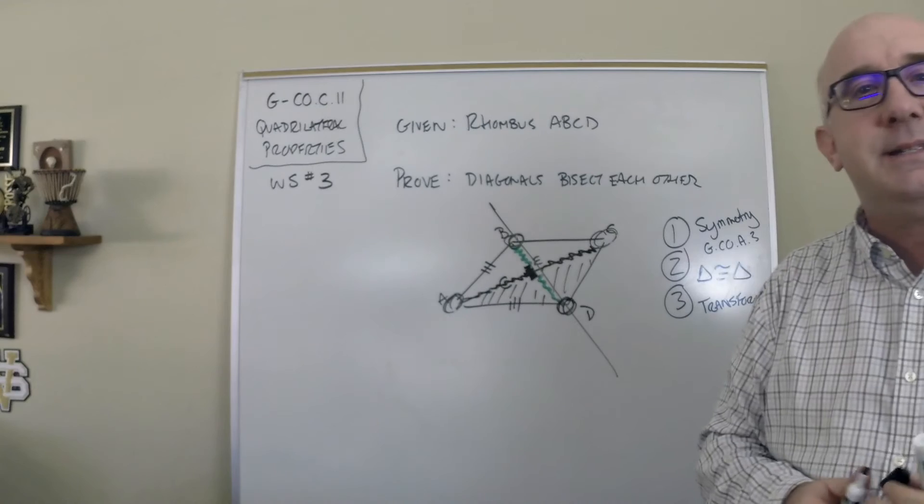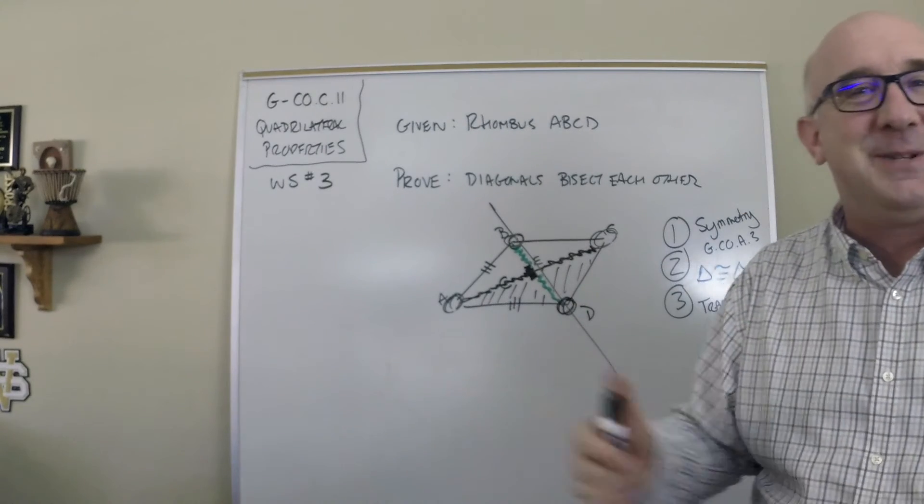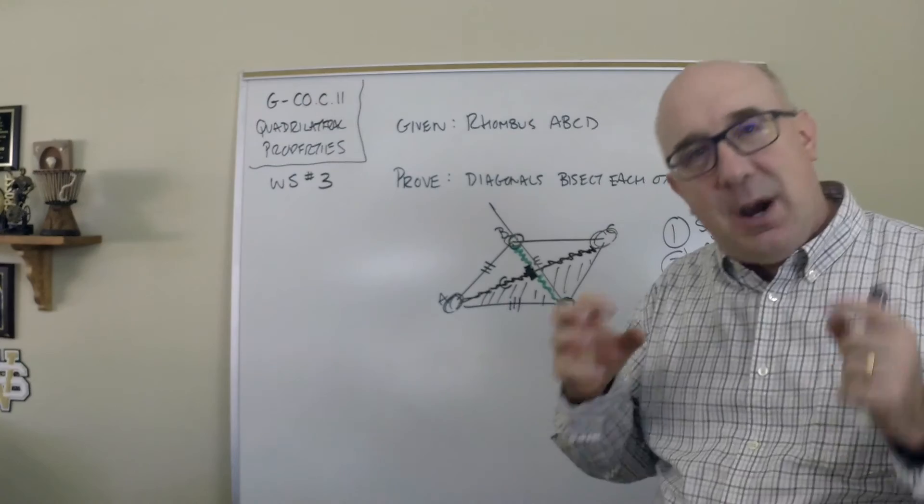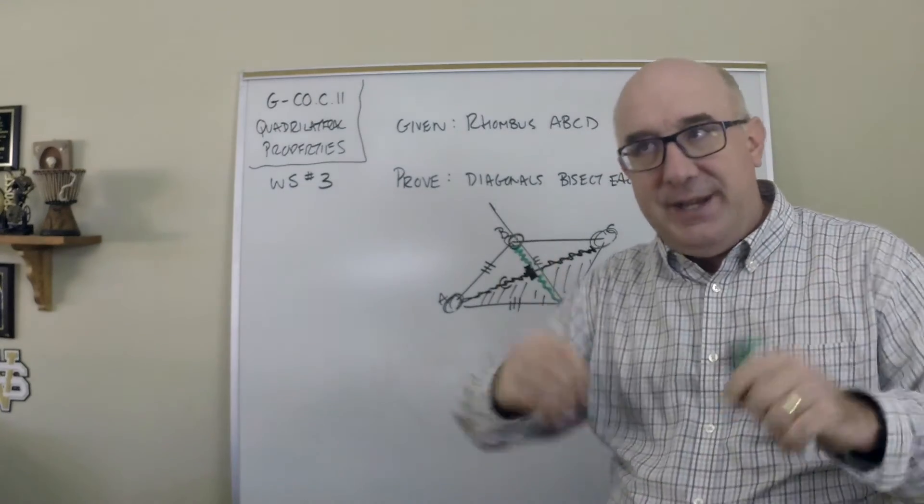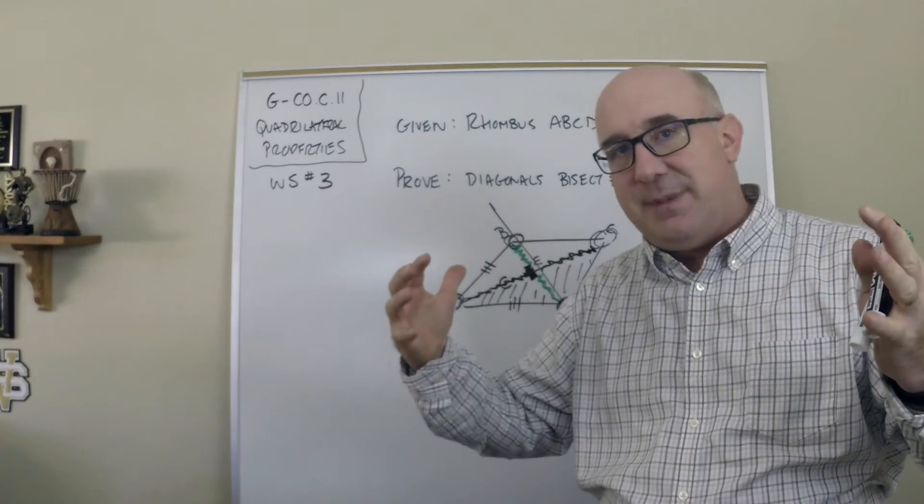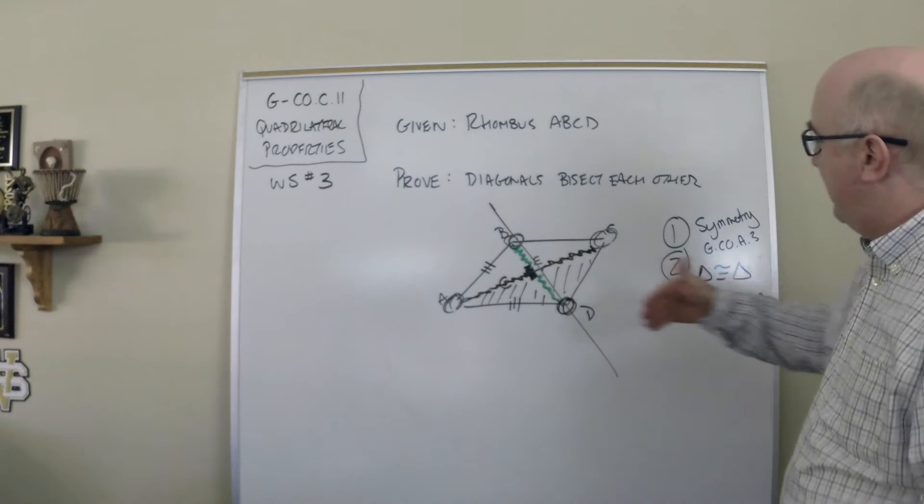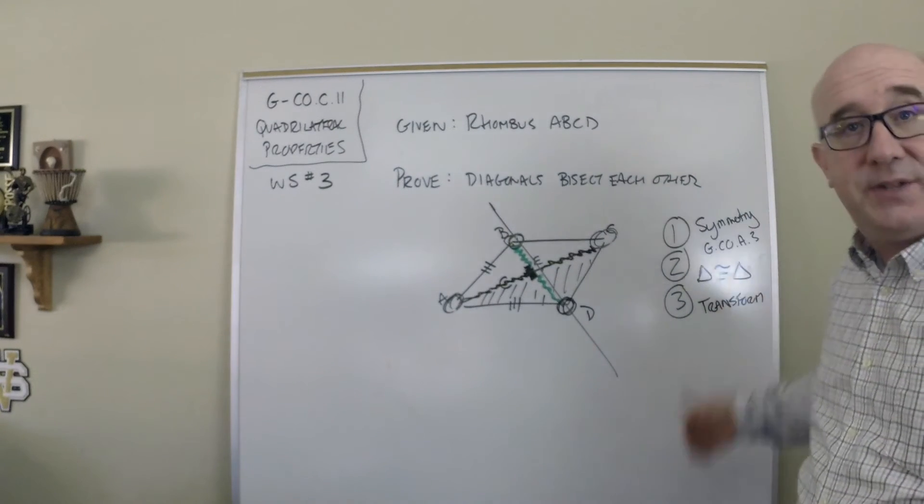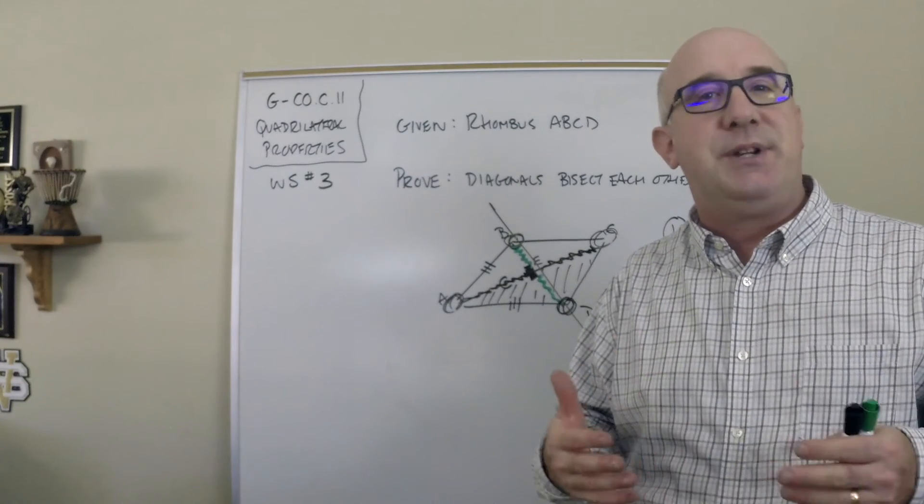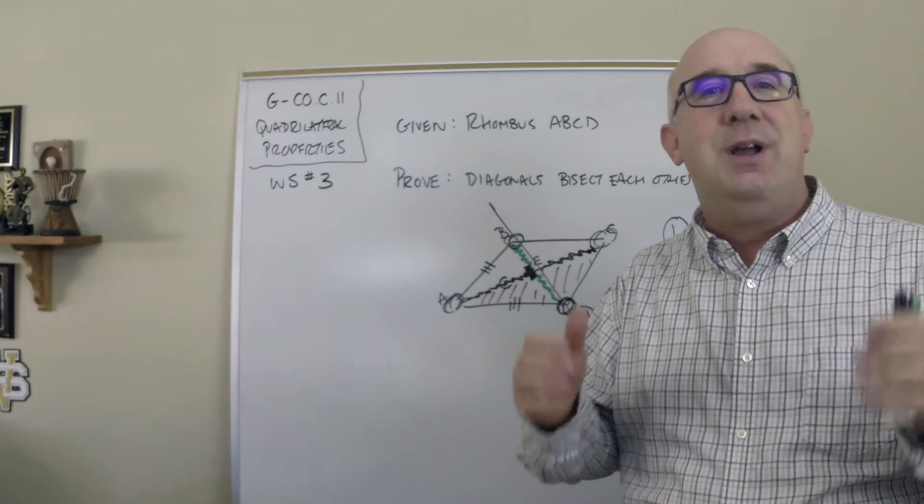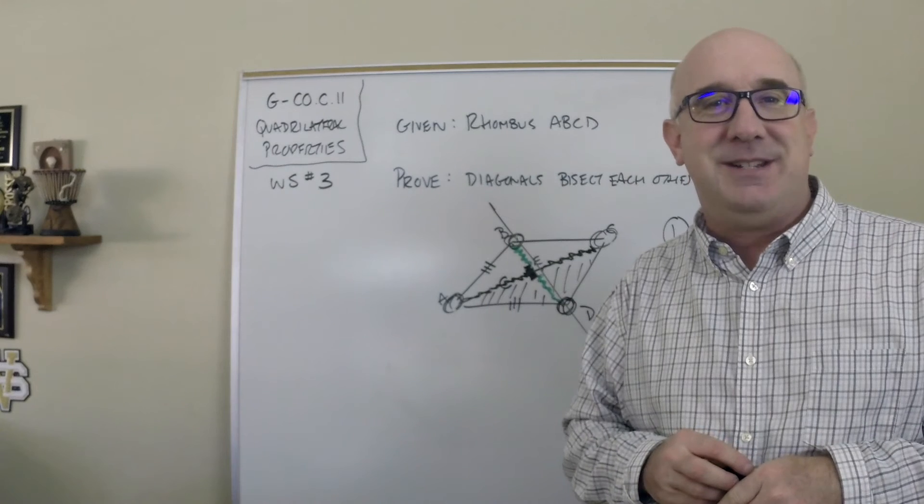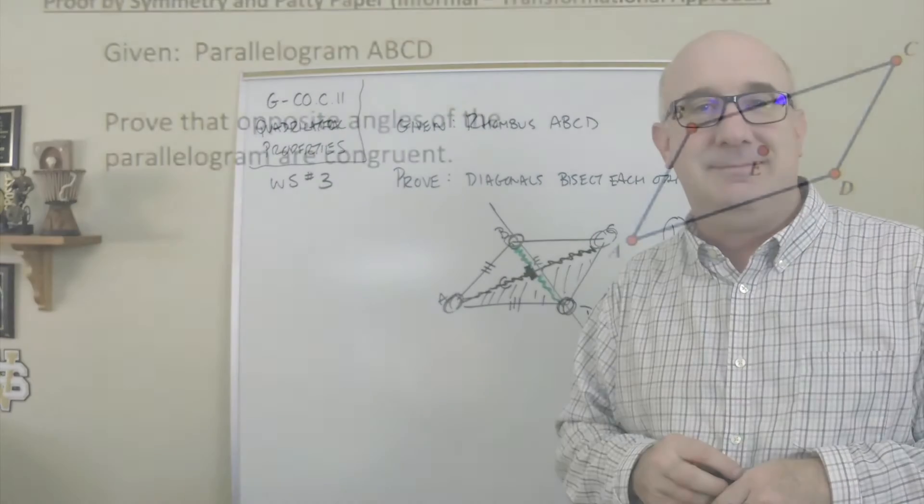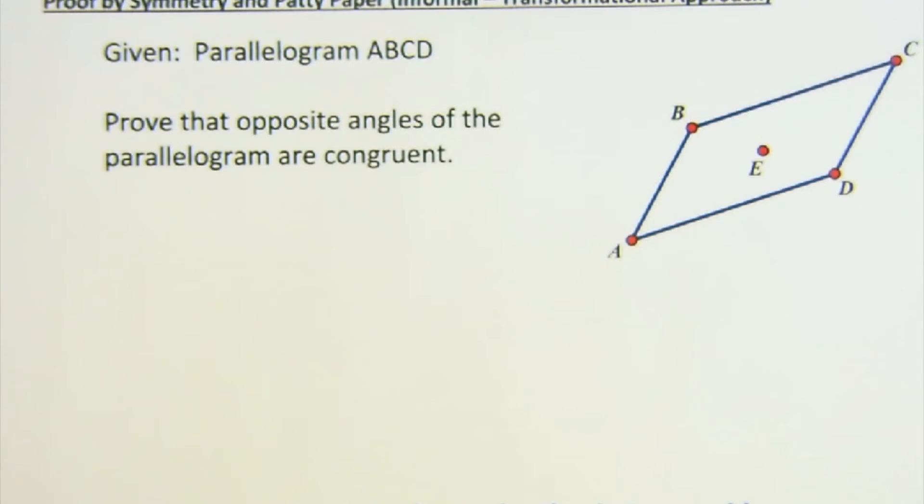These again are just some general ideas. This isn't all of the ideas of this particular worksheet, but this is how I want you to think about it. Are there things that you've learned and developed about these shapes that would help you to make an argument, either through symmetry or congruence or through transformations, that would help you to express why the properties of these shapes exist?